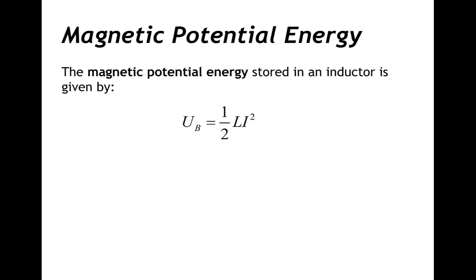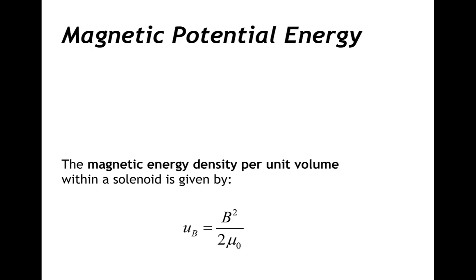Now that we know what the magnetic potential energy is that's stored in an inductor, let's turn our attention to finding the magnetic energy density per unit volume. We're going to show that the magnetic energy density per unit volume within a solenoid is given by the square of the magnitude of the magnetic field divided by two times the permeability of free space.